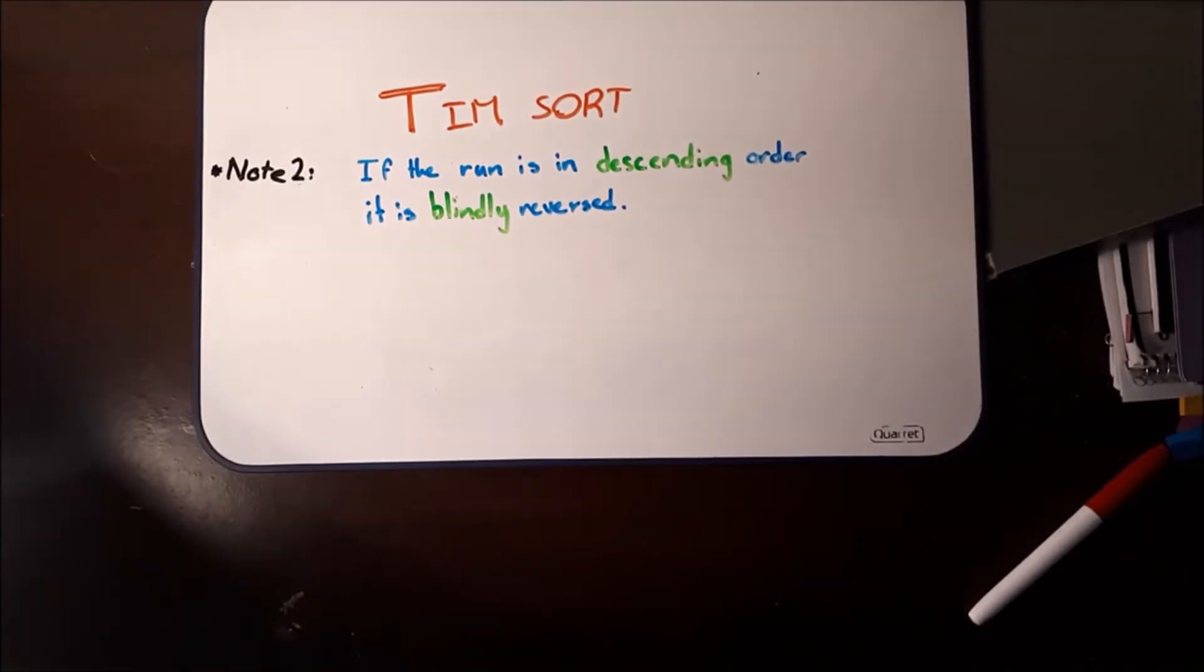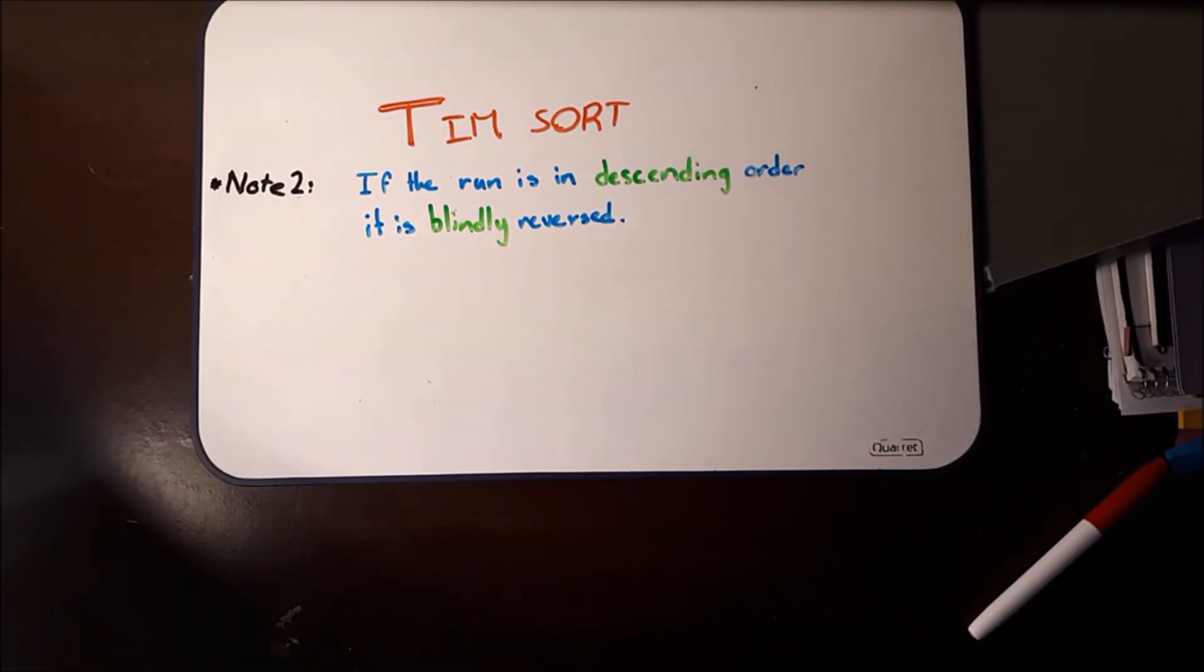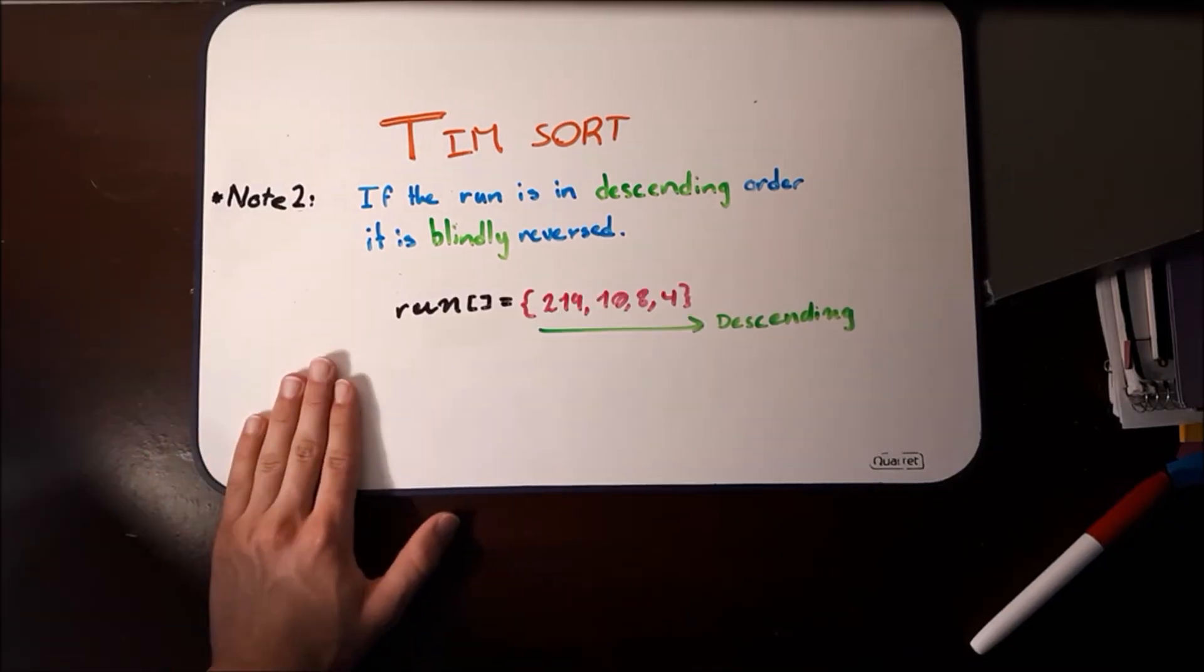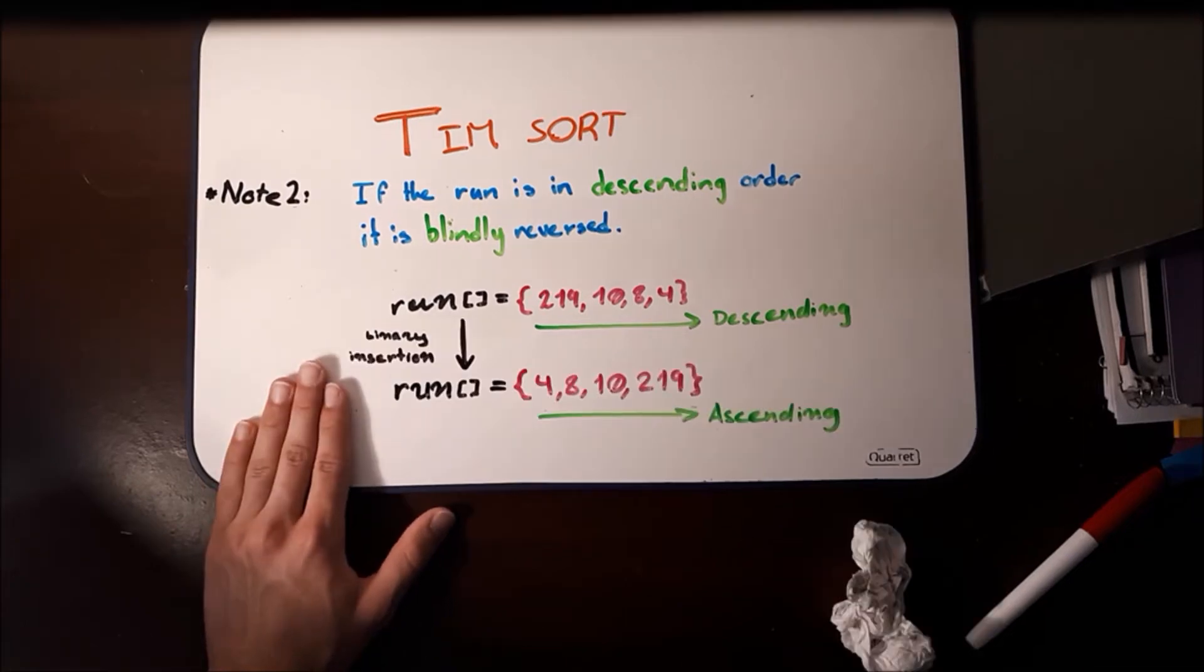Another feature of Timsort is that if the run is in descending order, it is blindly reversed. So in this example, where the run has elements 219, 10, 8, and 4, this is in descending order, the array is blindly reversed into 4, 8, 10, and 219, ascending order.